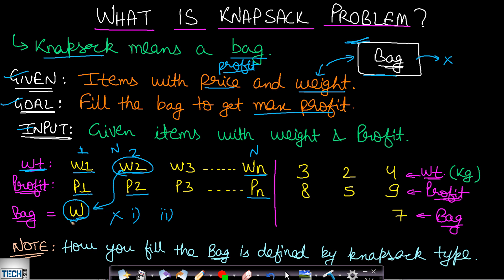There are many ways in which you can include an item into your bag: you can include the entire item, include multiple instances of an item, or include a fractional part of an item — it all depends on what type of knapsack it is. In a simple example with three items having associated weights in kg and profits, if the bag capacity is 7 kg, what items will you put in to maximize profit?